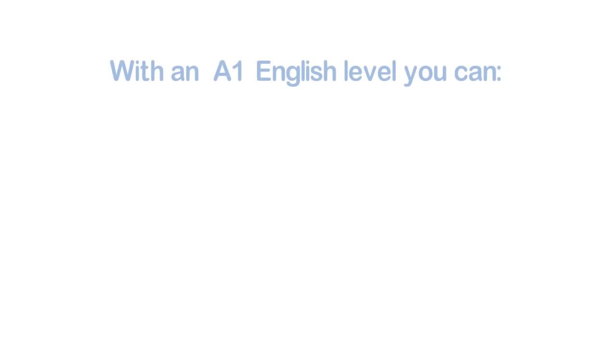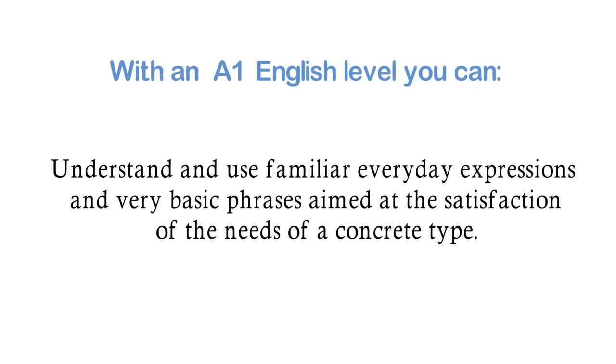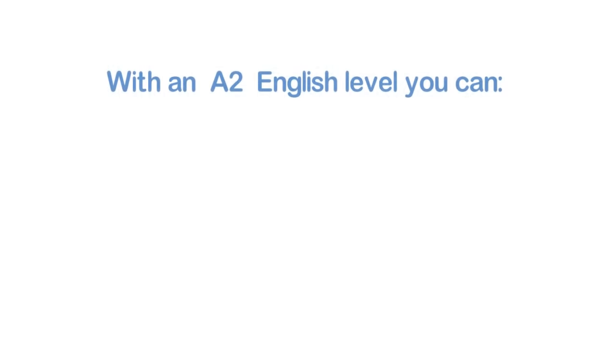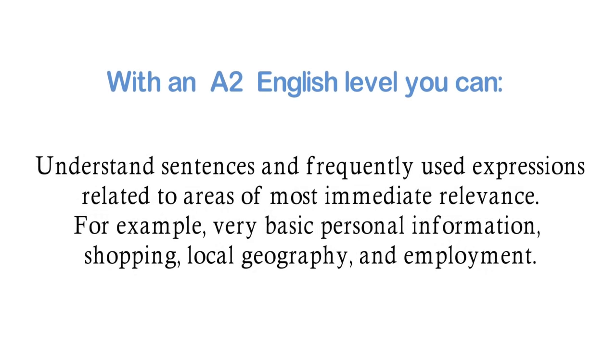With an A1 English level, you can understand and use familiar everyday expressions and very basic phrases aimed at the satisfaction of needs of a concrete type. With an A2 English level, you can understand sentences and frequently used expressions related to areas of most immediate relevance, for example, very basic personal information, shopping, local geography, and employment.